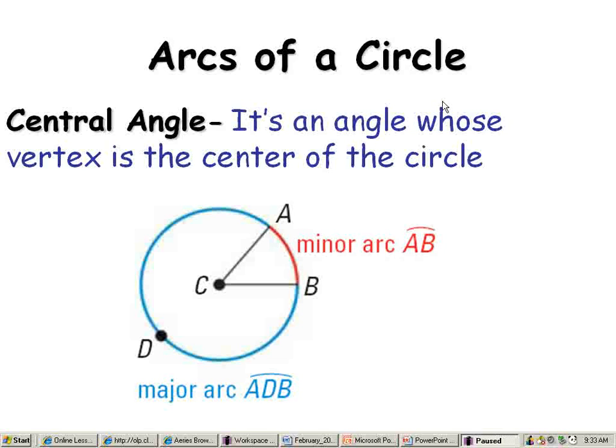Okay, I've got something called arcs of a circle. But I'm talking about arcs, but then I introduce something called a central angle. And you might be thinking, why? What's the deal? What's the connection there? Well, it's an angle whose vertex is the center of the circle. We all know what the center of the circle is. It's the point in the middle of the circle, right? So watch what I do here. I'm going to take that center, and I'm going to construct to that. Watch.